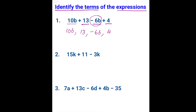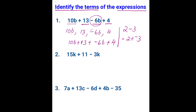You can rewrite this expression as 10b plus 13 plus negative 6b plus 4, thinking of subtraction as adding the negative. Remember when we learned integers, 2 minus 3 is the same as 2 plus negative 3. So subtracting 6b is the same as adding negative 6b. There are 4 terms: 10b, 13, negative 6b, and 4.